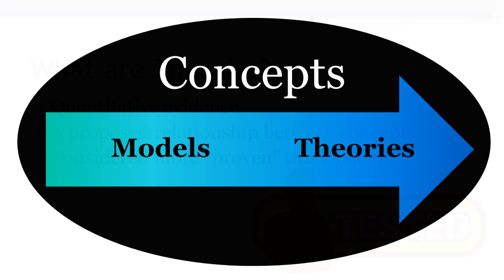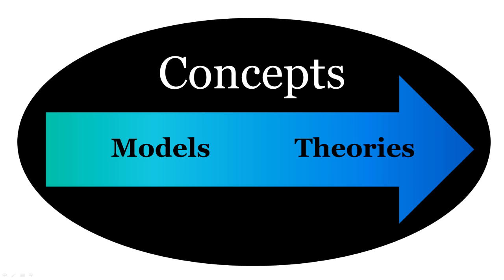Remember, concepts need to be defined in order to build a model or a theory. Both models and theories show proposed relationships between concepts. The difference between a model and a theory is the amount of proof that exists for them, which stems from how they were developed. Models are not considered proven. Theories are considered proven and supported by multiple research studies. That is why they are viewed as a more systematic representation of phenomena.